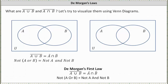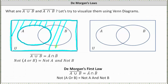Let's graph A complement, then graph B complement, and then determine the intersection of the two sets. So if inside this set is A, then outside this set would be A complement, or not A, which is this light blue region. And now let's graph B complement, or not B. So if inside this region is B, then outside this region would be not B, or B complement, which is this light green region.